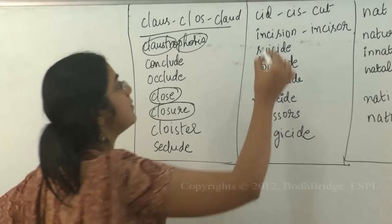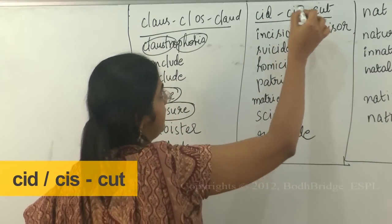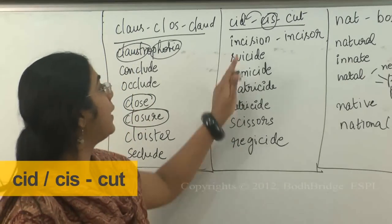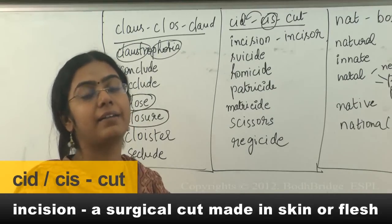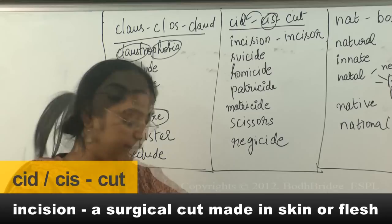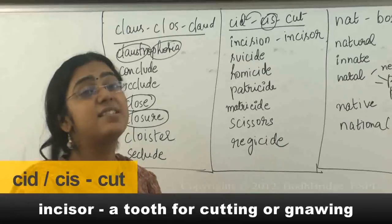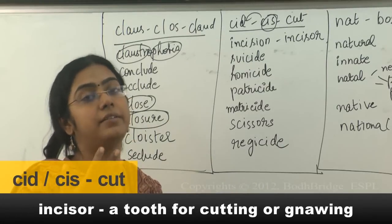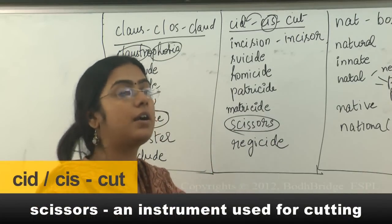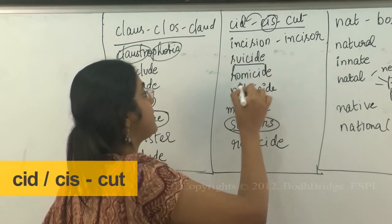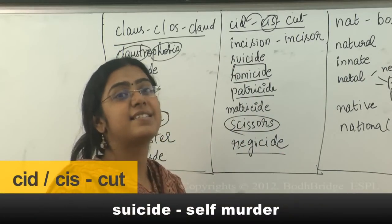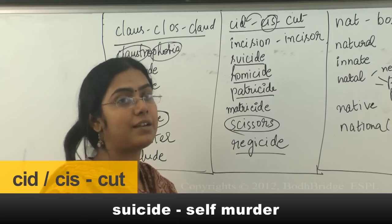The root word CIS, from which you also get CID, means to cut. From this you get incision — a cut on the skin. Surgeons make an incision before they operate. The incisor is the tooth you use to cut through food. Scissors are used to cut. Suicide is self-cutting — self-killing, killing your own self.